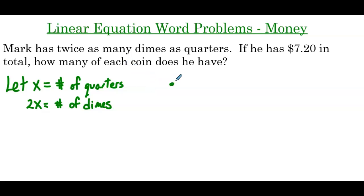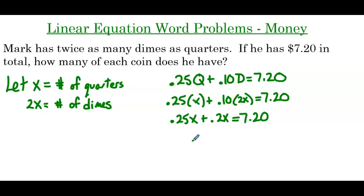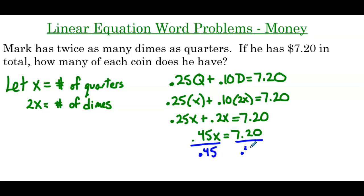Each quarter is worth 25 cents times the number of quarters he has, plus 10 cents times the number of dimes, and that gives us $7.20. Replacing the quarters and dimes in terms of x, we get 0.25 times x plus 0.1 times 2x equals 7.2. Simplifying the left side: 0.25x plus 0.2x equals 7.2, which is 0.45x equals 7.2. Dividing both sides by 0.45 gives us x equals 16.